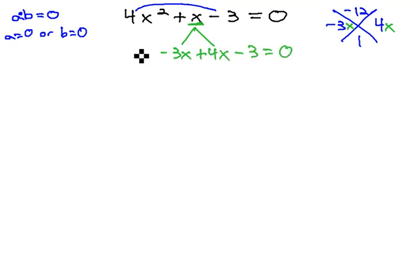We still have the minus 3 at the end, and we still have the 4x squared at the beginning, and it still equals 0.